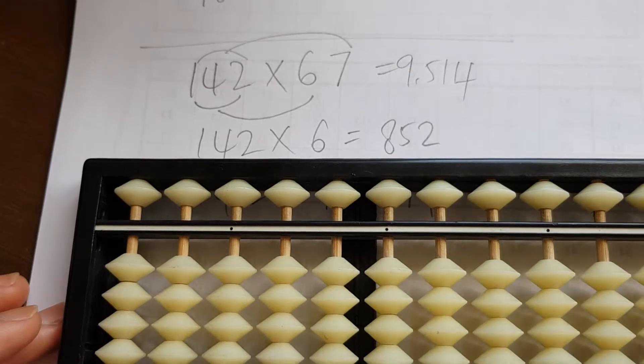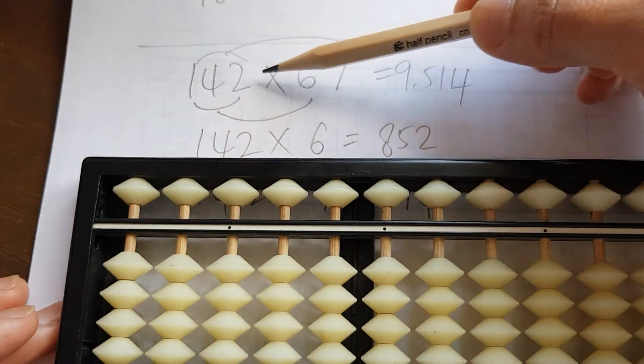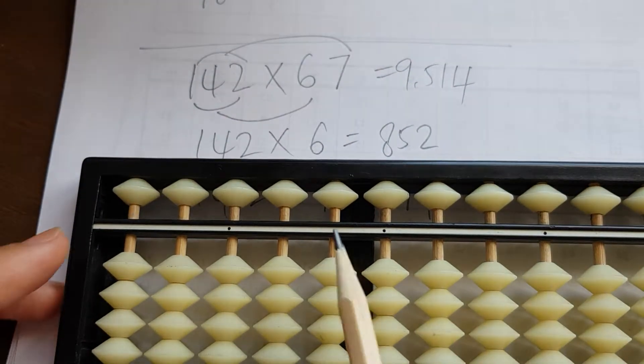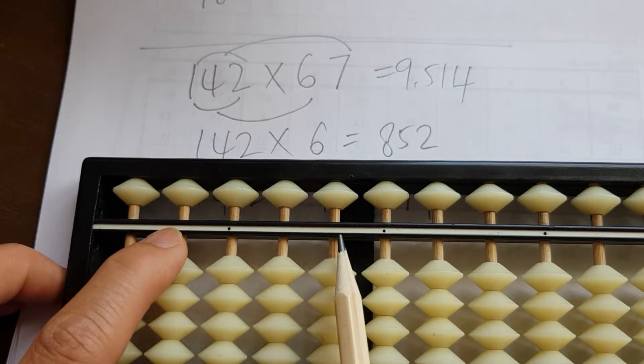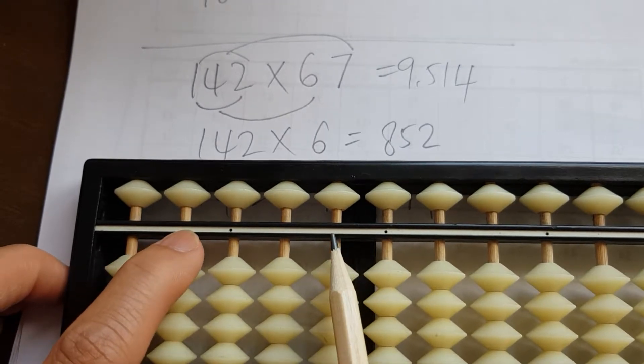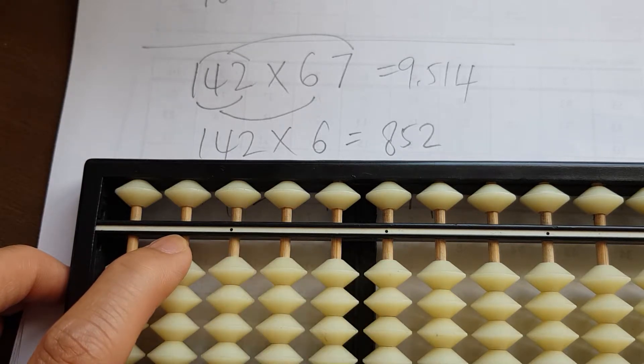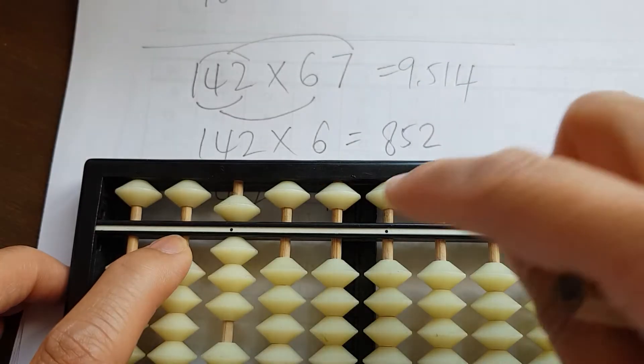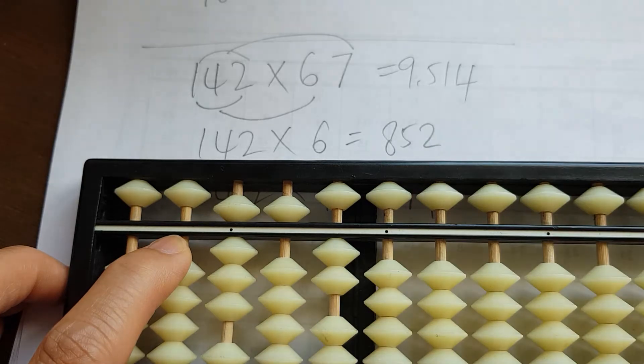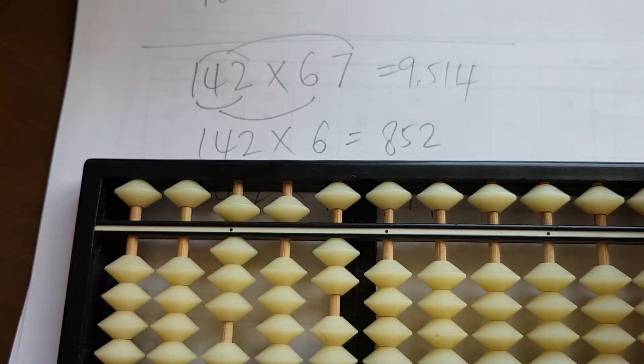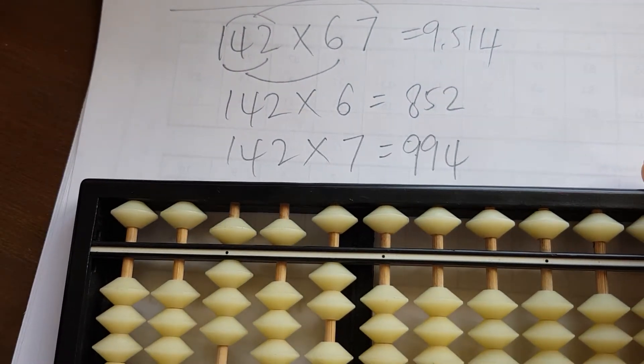What we do next is multiply 142 times six first, and we need to put it on the first four columns, which is 852. So 800 you need to put here, then 852.